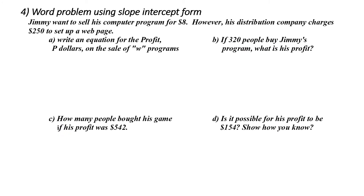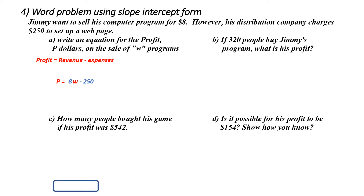Last question — word problem using slope-intercept form. Jimmy wants to sell his computer program for $8. However, his distribution company charges $250 to set up the webpage. Write an equation for profit p dollars on the sale of w programs. Profit is revenue minus expenses. I'm going to treat profit p like y, and w like x. He paid $250 to set up. If he sells w programs, that's 8 times w. So the equation is p equals 8w minus 250 — in slope-intercept form, where my y-intercept is negative 250 and my slope is 8.